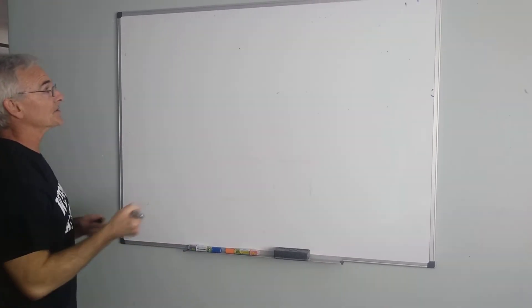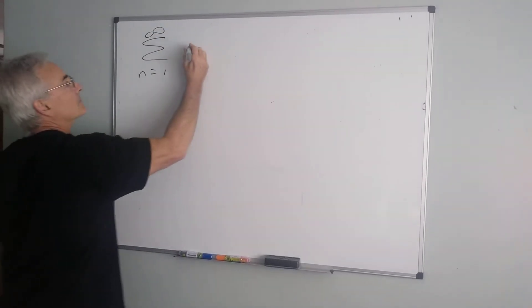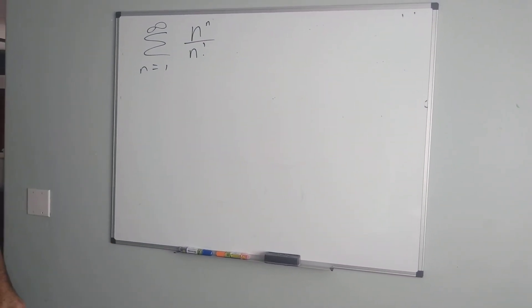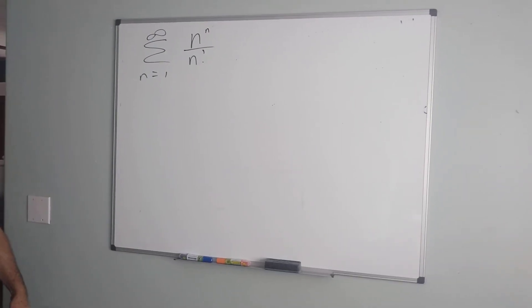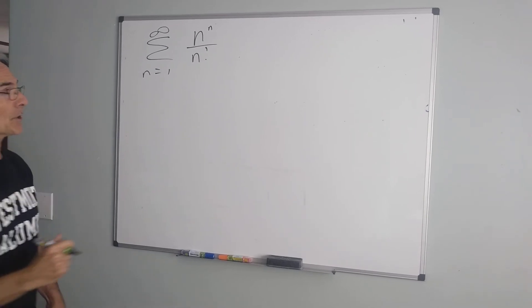Now, we're going to look at another example that's a little bit more complicated. n to the n over n factorial. Now, n to the n is an odd function because it's neither exponential nor is it polynomial, so the expansion is going to be a little bit tricky.